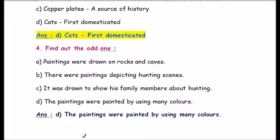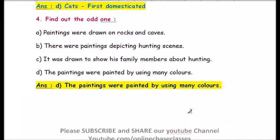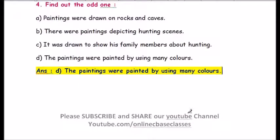Question number four: find out the odd one. a) paintings were drawn on rocks and caves, b) there were paintings depicting hunting scenes, c) it was drawn to show his family members about hunting, d) paintings were painted by using many colors. The answer is option d) — paintings were painted by using many colors.